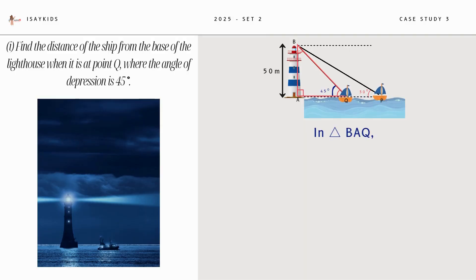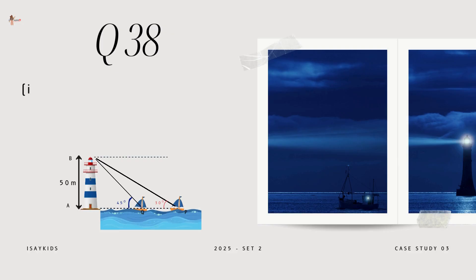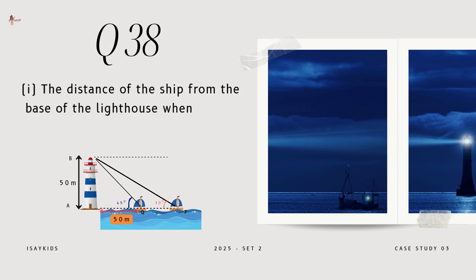In triangle BAQ, tan 45 degrees is BA upon AQ. That means 1 is equal to 50 upon AQ, which gives us AQ as 50 meters. Thus, the distance of the ship from the base of the lighthouse, where it is at point Q is 50 meters.